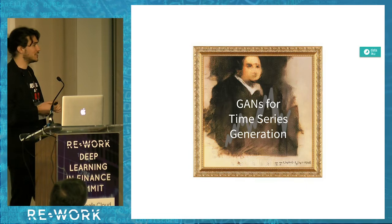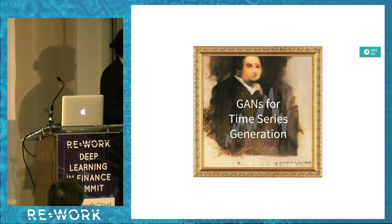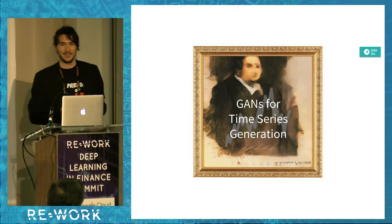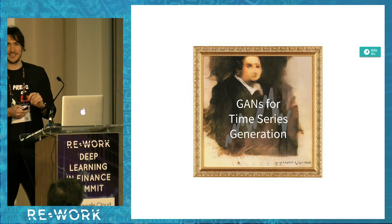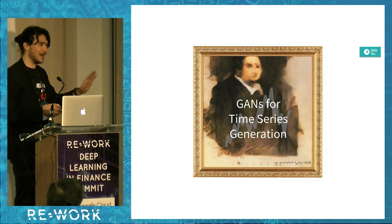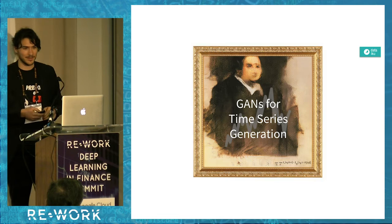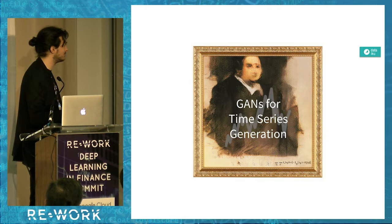Enter generative adversarial networks. For those who don't know that famous portrait — this was made by a GAN and was sold at Christie's for about 400,000 pounds. I won't comment on the rationality of that, but it's a fact. Let's talk about how this applies to time series generation.